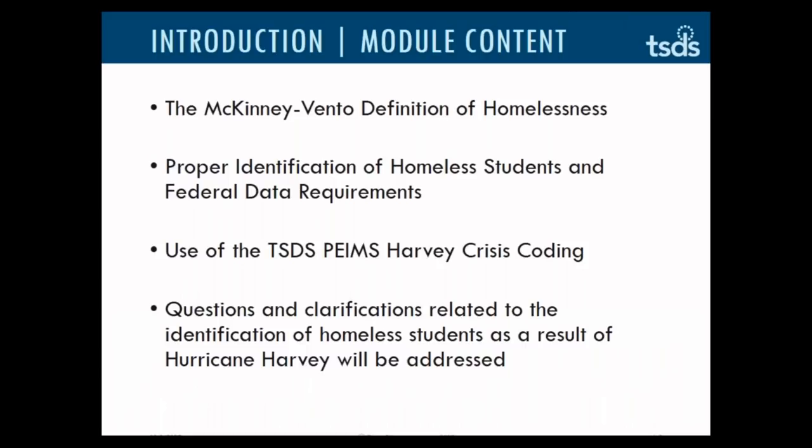During this training, we will review the McKinney-Vento definition of homelessness, proper identification of homeless students and federal data requirements, use of the TSDS-PEIMS Harvey Crisis Coding, and questions and clarifications related to the identification of homeless students as a result of Hurricane Harvey will be addressed.